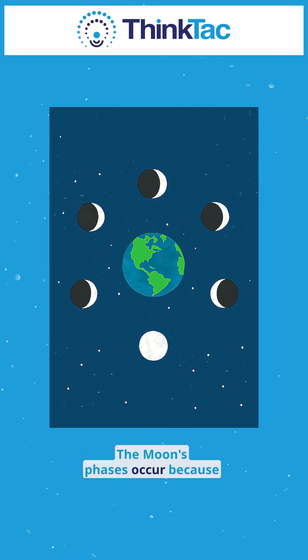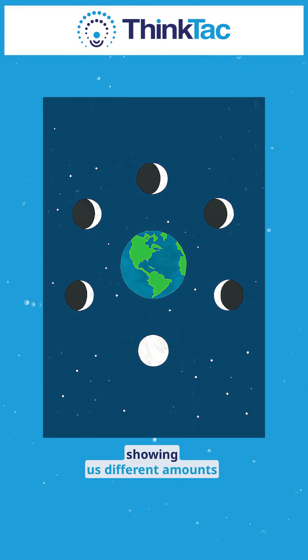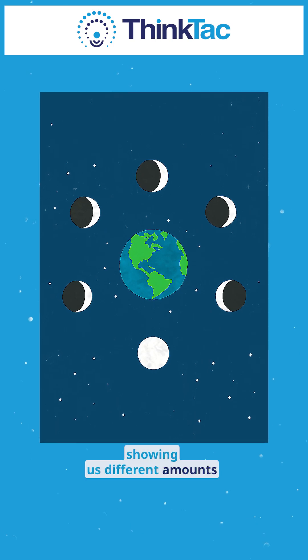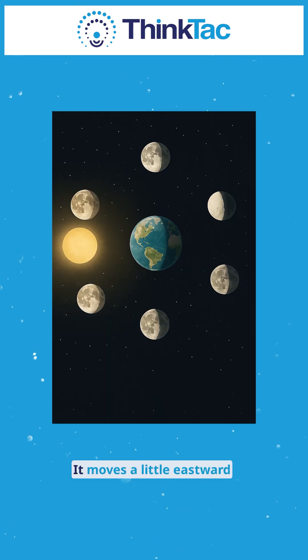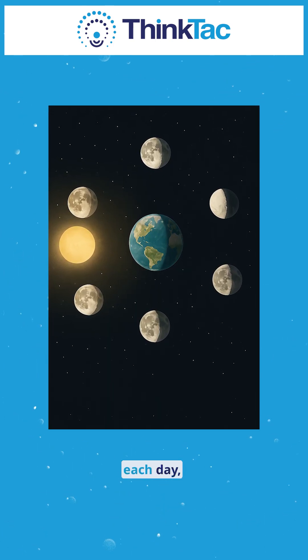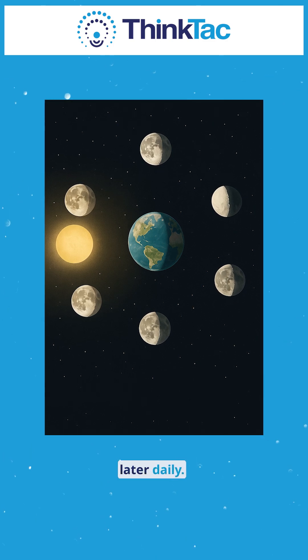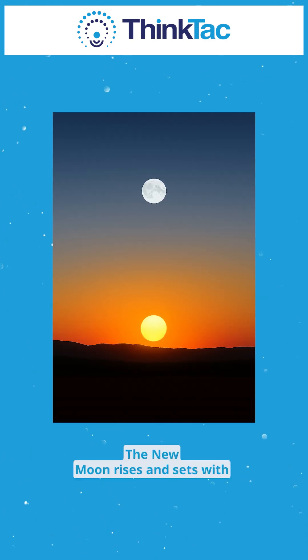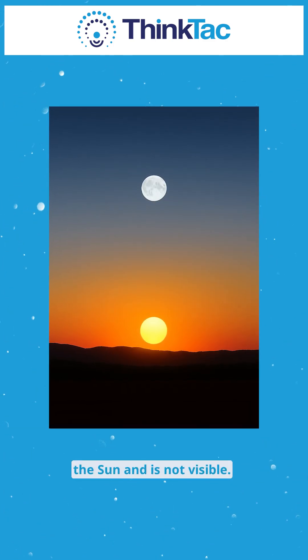The moon's phases occur because it orbits the earth, showing us different amounts of its sunlit side. It moves a little eastward each day, so it rises about 50 minutes later daily.